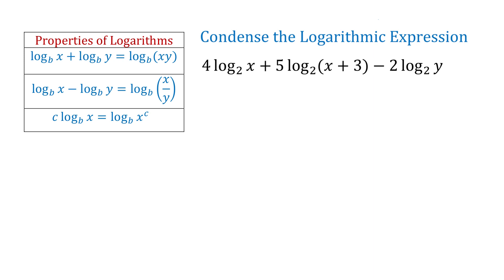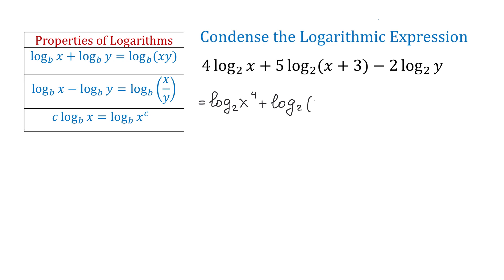When we start condensing a logarithmic expression, first we need to use the power rule to write each coefficient as an exponent. In our example, 4 will become the exponent of x, 5 will become the exponent of x plus 3, and 2 will become the exponent of y. Then we will have log base 2 of x to the 4th power plus log base 2 of x plus 3 to the 5th power minus log base 2 of y to the 2nd power.